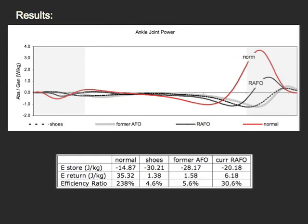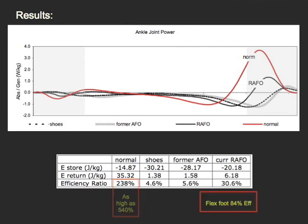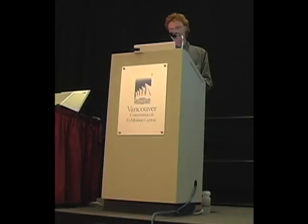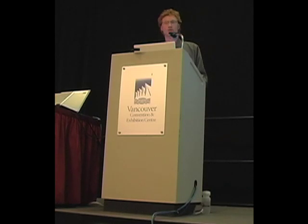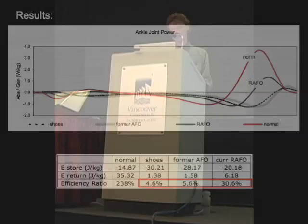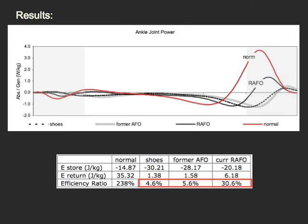Efficiency ratios of the AFO are far below normal and even prosthetic values. Normal values as high as 540% have been reported in earlier studies, and a prosthetic study looking at a flex foot documented efficiency ratios as high as 84%. I mention this to put things into perspective. At present, energy-storing-and-return devices are merely mechanical springs — passive devices only able to return some of the energy they absorb over a gait cycle. Even a perfect spring at 100% efficiency would be less than half as good as a normal ankle. What's important is that compared to the patient's former AFOs or shoes-only condition, there's a considerable improvement — we jumped from 4–6% up to 30%.